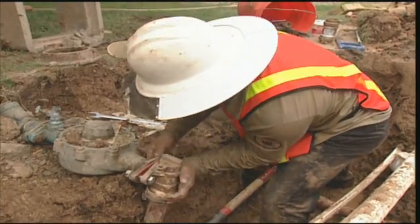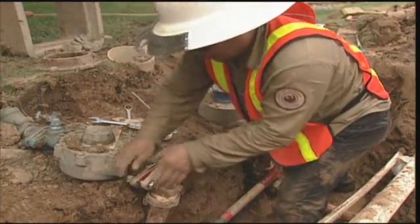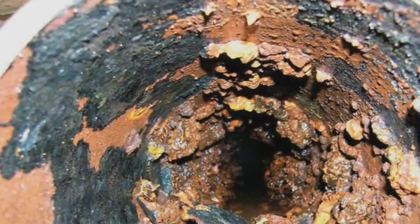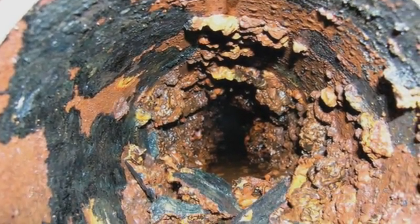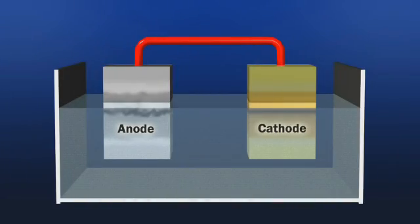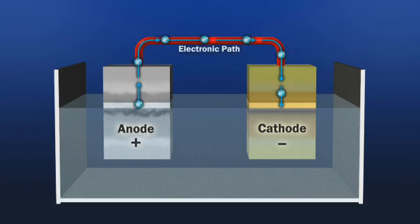The metals used in pipes and fittings have individual potentials for giving up electrons and causing corrosion. The electrochemical reaction is similar to that of a battery. The anode is positively charged while the cathode is negatively charged, and corrosion is caused when electrons flow from the anode to the cathode.